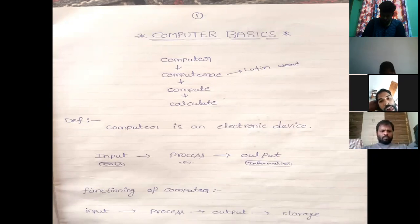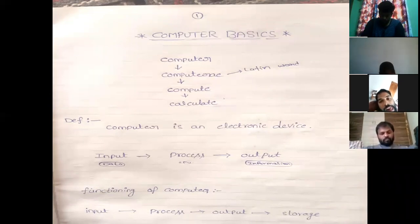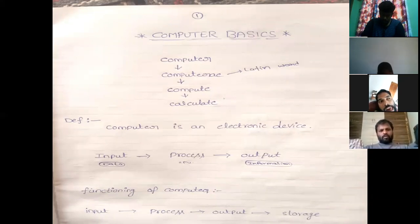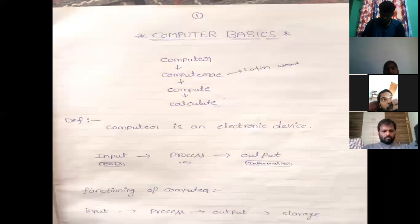A computer is a system of electronic devices powered by a power source — such as a fan, AC, steam, or fuel. If you have a power source, you can use it as an electronic device or a computer.